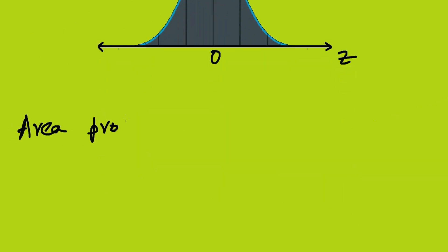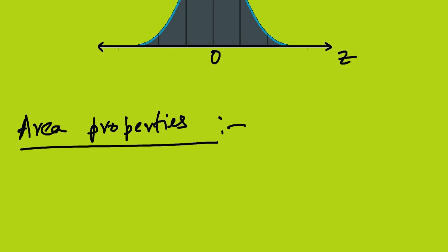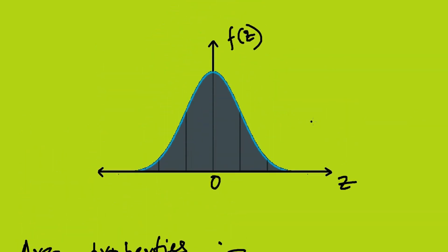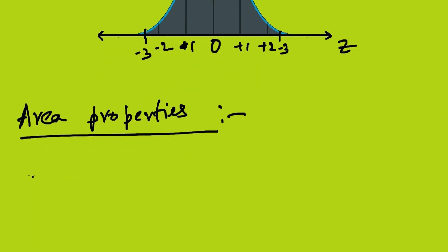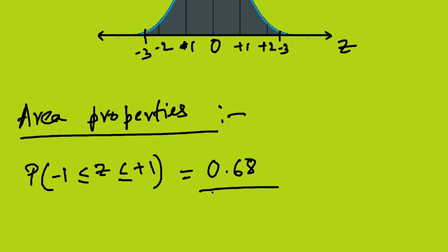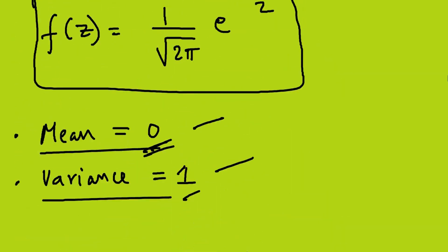With the help of area properties we can solve problems without doing any calculation — simply by knowing these values. On the z-axis, we mark points: −3, −2, −1, 0, +1, +2, +3. The probability from z = −1 to z = +1 is 0.68.